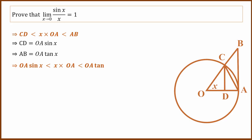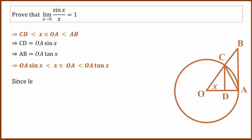So: OA·sin x is less than x multiplied by OA, which is less than OA·tan x. Since the length OA is positive, we divide throughout by OA. We have: sin x less than x less than tan x.